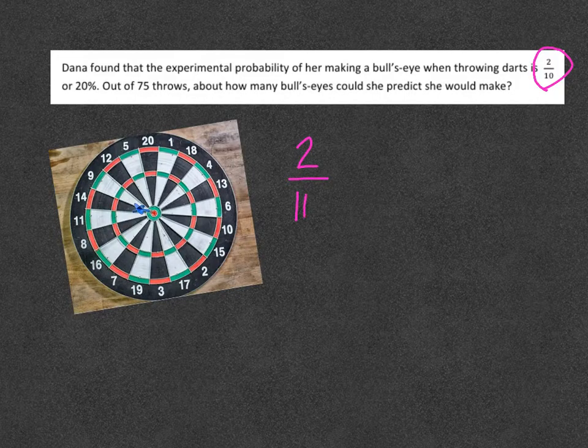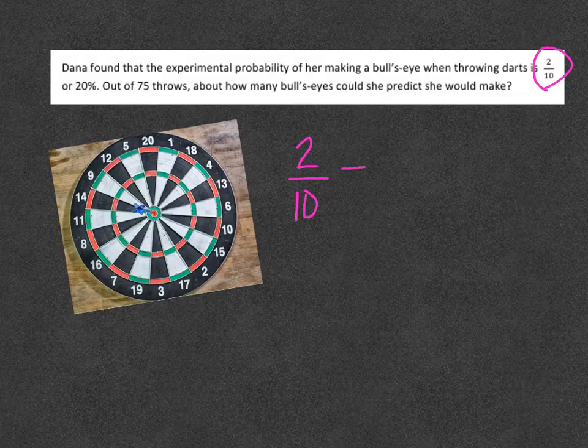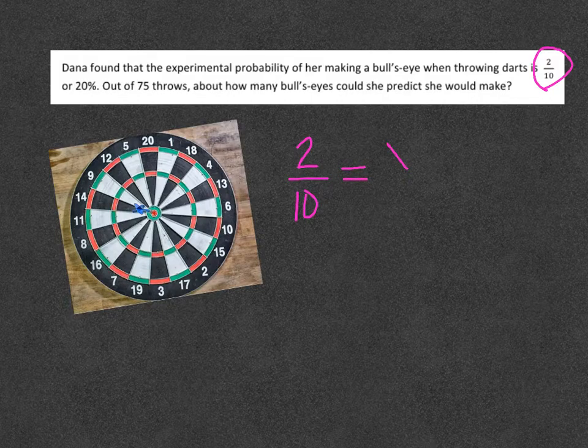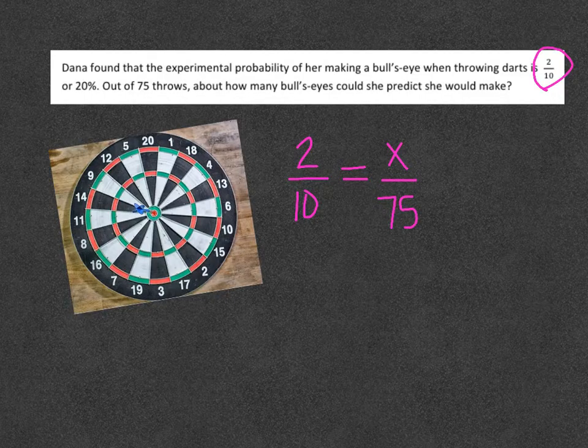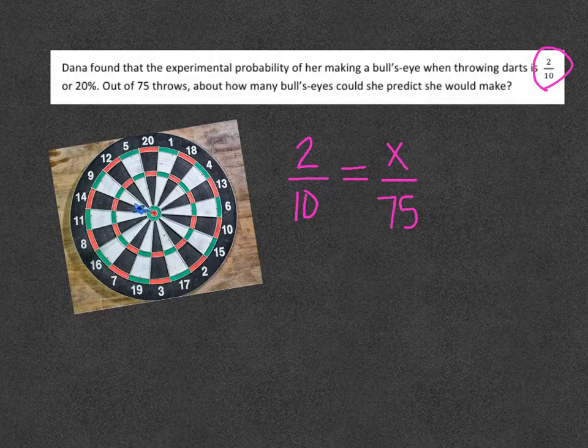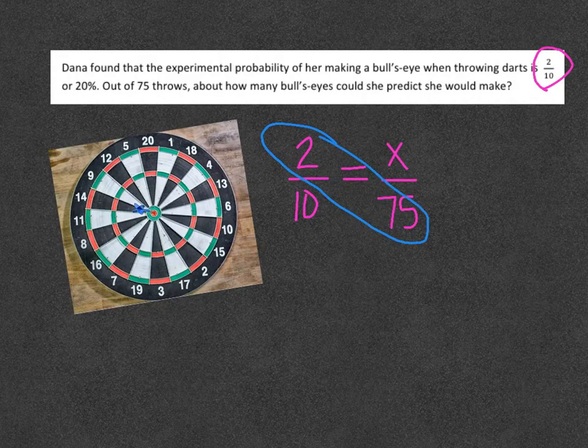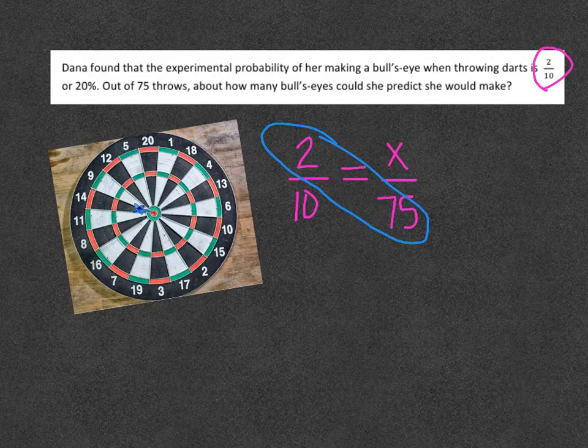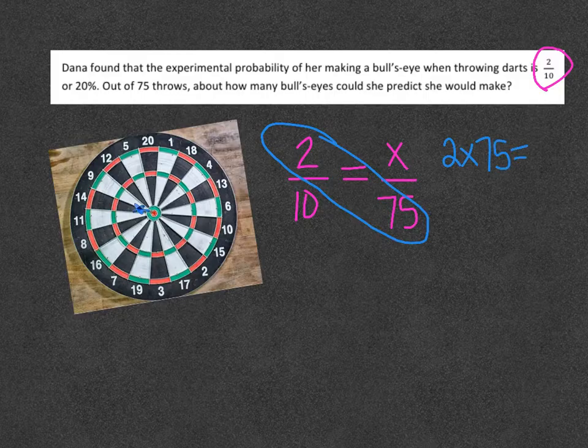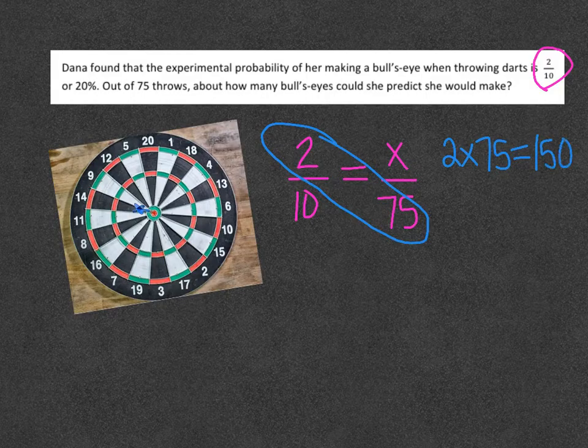I'm going to make it two out of ten times, and now I need to try and decide how many times I would make it out of 75. One way to solve this that I previously taught my class to do is to look sideways or diagonal and multiply those two together. Two times seventy five is 150.